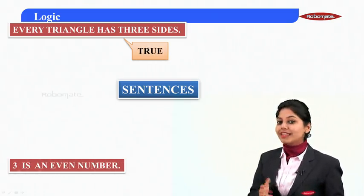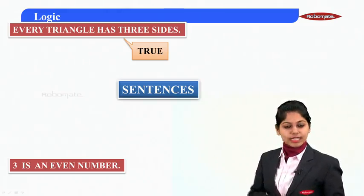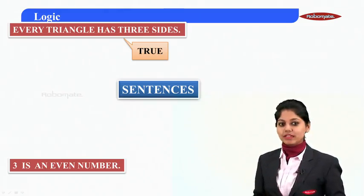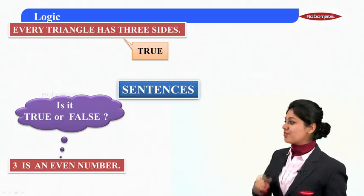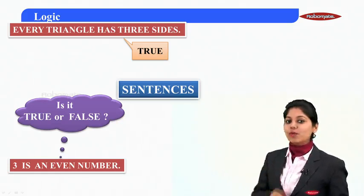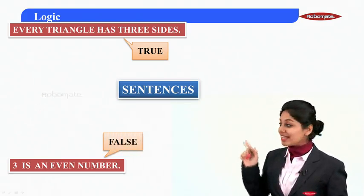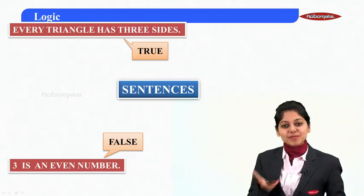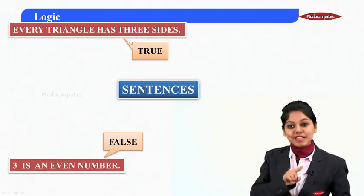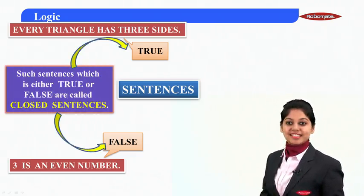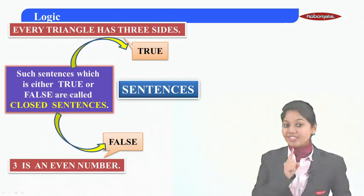Here is another example: 'Three is an even number.' Now if I ask you, is it actually an even number? No, it's an odd number. So the given statement is a false sentence. Such sentences which have a truth value — meaning they can be either true or false — are called closed sentences.